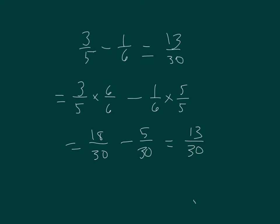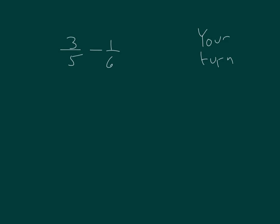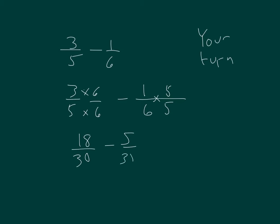Three-fifths minus one-sixth is equal to thirteen-thirtieths. Okay, it's your turn. Pause the video while you do your work. Did you make the common denominator? Common denominator of thirtieths: three times six is eighteen-thirtieths minus five-thirtieths, which equals thirteen-thirtieths. Compare that against your work. We renamed those fractions into smaller units to be able to subtract them.